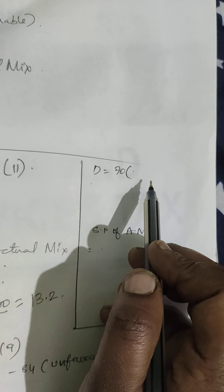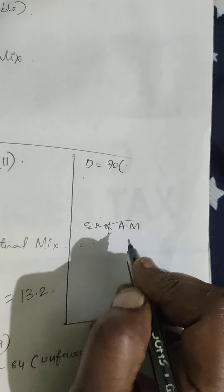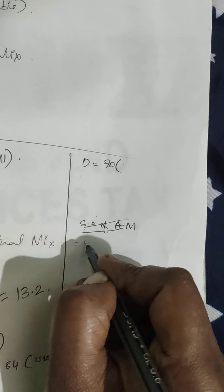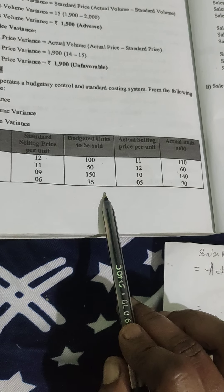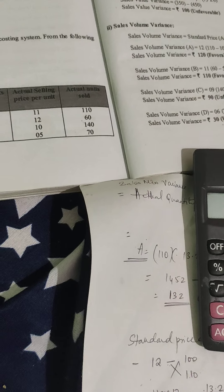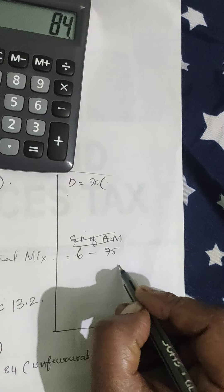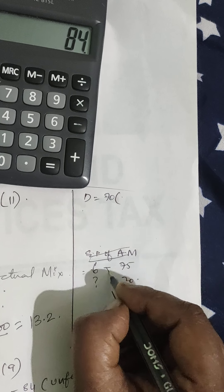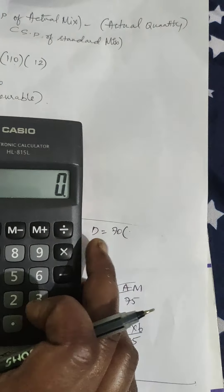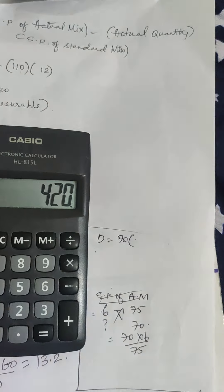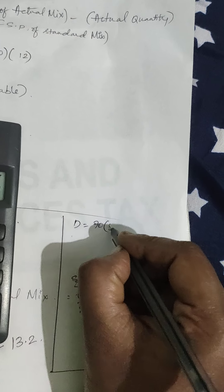For Product D, applying the same formula. The standard price is 6 for a budgeted volume of 75 units, and the actual quantity is 70. Cross-multiplying: 70 × 6 ÷ 75 = 5.6. So the standard price of actual mix is 5.6.